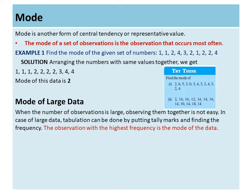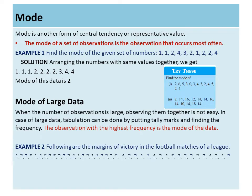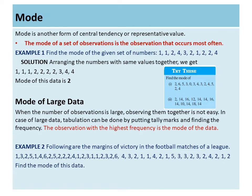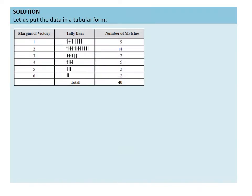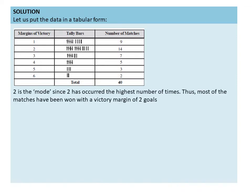Next is mode of large data. When the number of observations is large, observing them together is not easy. In case of large data, tabulation can be done by putting tally marks and finding the frequency. The observation with the highest frequency is the mode of the data. For example, we can make a frequency distribution table using tally marks. In this question, margins of victory are shown, and we have seen that two is the mode since two has occurred the highest number of times. Thus, most matches have been won with a victory margin of two goals.